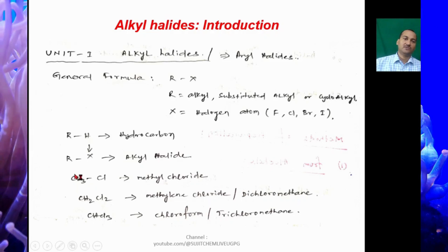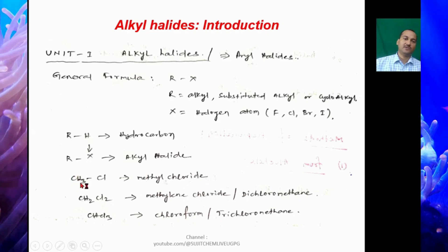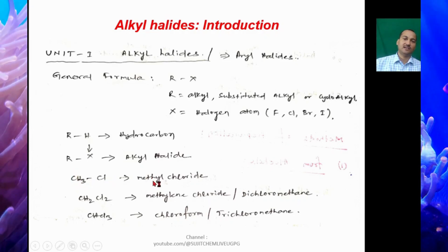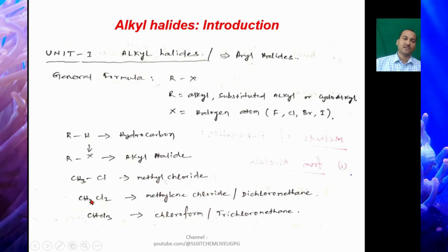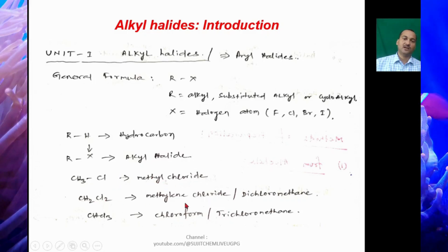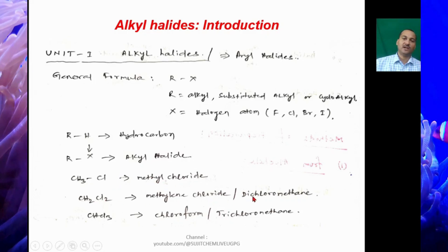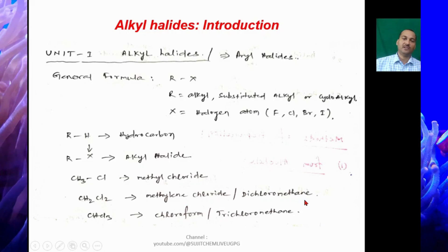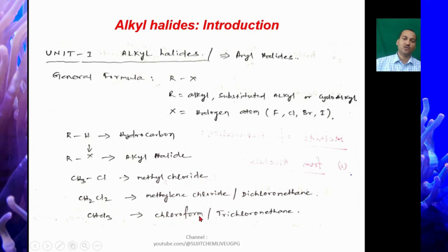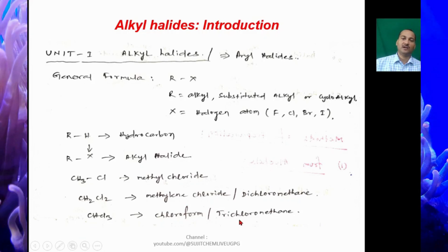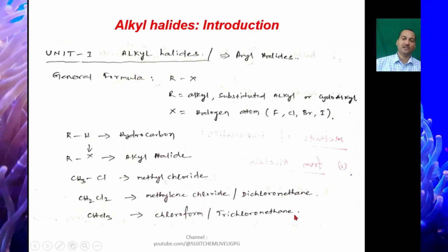Some examples: CH3Cl is methyl chloride; CH2Cl2 is methylene chloride or dichloromethane; CHCl3 is chloroform or trichloromethane.